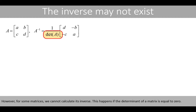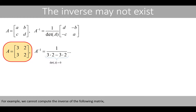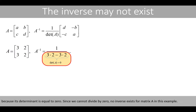However, for some matrices we cannot calculate the inverse. This happens if the determinant of a matrix is equal to 0. For example, we cannot compute the inverse of the following matrix because its determinant is equal to 0. Since we cannot divide by 0, no inverse exists for matrix A in this example.